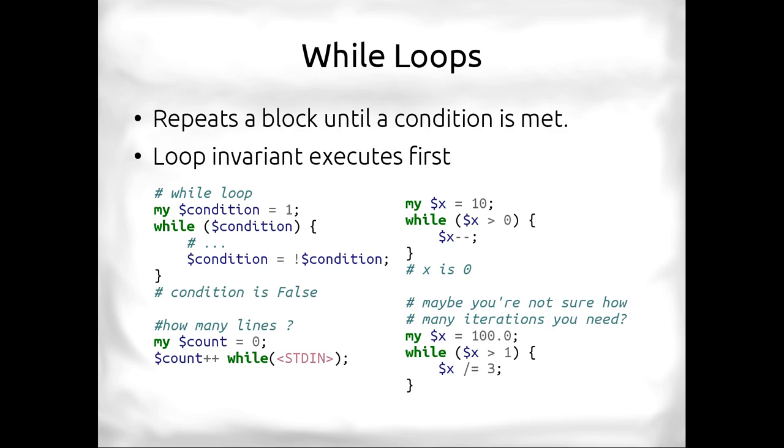So here we go. We've got while loops. These are one of the first ways to repeat in Perl. Basically, they allow us to repeat a block until a condition is met, and usually that loop invariant, this condition here, executes first. So if we look at this very simple while loop, I've got condition equals one, and it says while condition is true, execute this code, and here it negates condition. So condition will be set to false or undef or something like that.